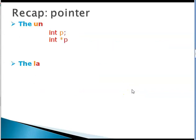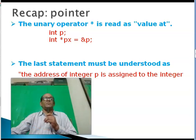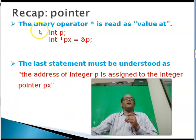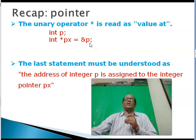We will just look at one more fact about pointers and then go into the next recap. Unary operator star is read as value at when you are initializing or assigning or accessing.